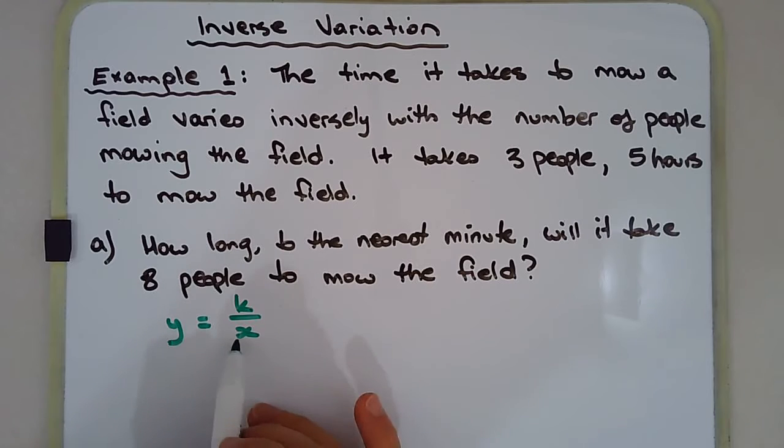As X gets larger, Y gets smaller. X gets smaller, as in X approaches zero, Y gets larger. So we're assuming X is positive as well, so I'm not using any sort of negative number of people.